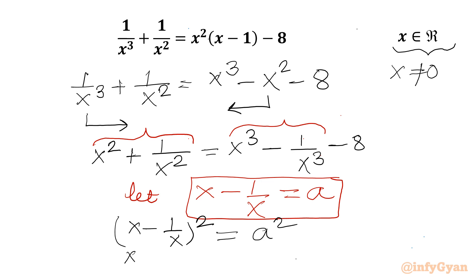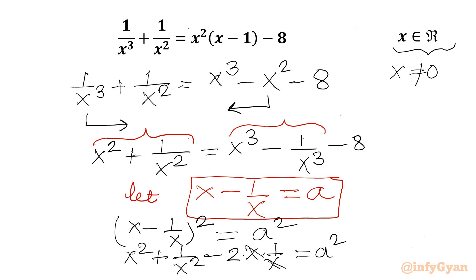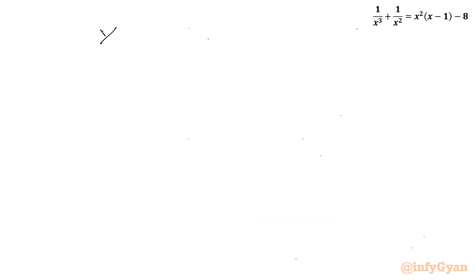So I can write x squared plus 1 over x squared minus 2 times x times 1 over x equal to A squared. The 2x times 1 over x cancels to 2, so x squared plus 1 over x squared equals A squared plus 2. Let me write that here: x squared plus 1 over x squared equals A squared plus 2.